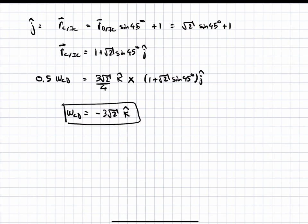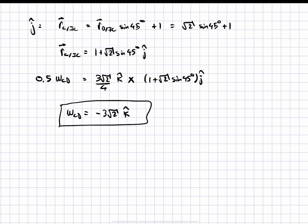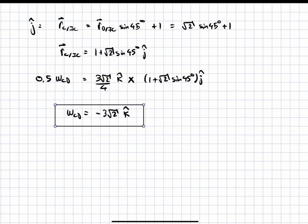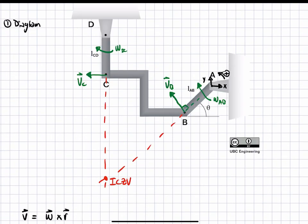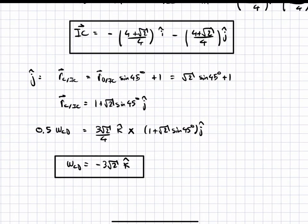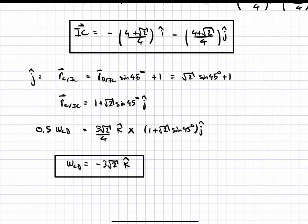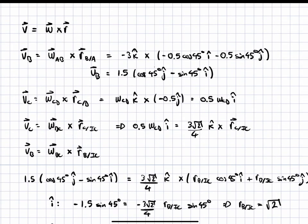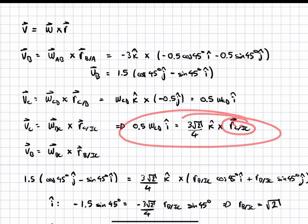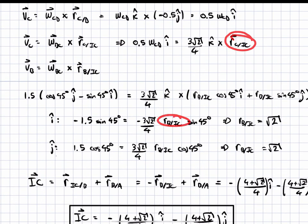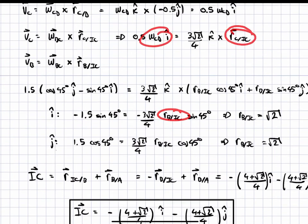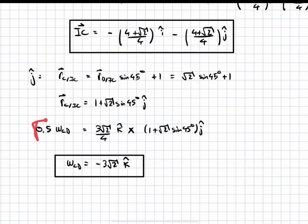Our answer is negative, which means the actual direction is opposite to what we assumed. So instead of clockwise, omega CD is actually counterclockwise. VC would point to the right and omega CD goes in the counterclockwise direction. We obtained this by plugging the radius of C with respect to IC — derived from the geometry using R_B/IC — into the velocity equation for VC, and solved for omega CD.